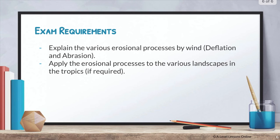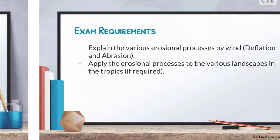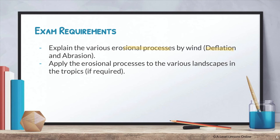Your exam requirements for this topic are very simple: just deflation and abrasion. You need to be able to explain these erosional processes by wind and apply them to various landscapes. Usually they will be applied to the aeolian landscape — for example, how abrasion helps in the formation of a yardang, or how deflation leads to the formation of a ventifact. You can also link them to transportation processes such as saltation, creep, and attrition, as well as deposition processes.